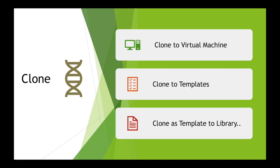There are three options when cloning. The first is clone to virtual machine — you clone the VM into another VM. The second is clone to template — you clone a running VM and turn it into a template. This is useful when you've built a golden template with all your software configured, and it means the source VM doesn't need to be powered off. For converting an existing VM to a template the traditional way, that VM does need to be powered off.